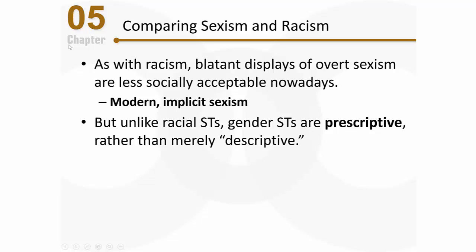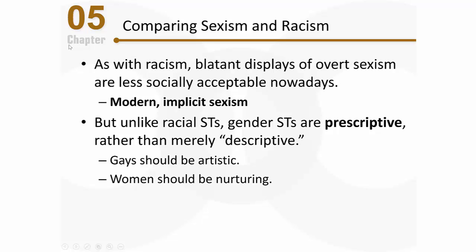Here's an interesting difference: unlike racial stereotypes, gender stereotypes are prescriptive rather than merely descriptive. Prescriptive stereotypes indicate what people in society believe men and women should be like — what traits they should have. For example, there might be a stereotype that gays are artistic, but society doesn't feel that gays should be artistic, so that's not prescriptive. But there is a stereotype that women are loving and nurturing, and society does believe women should be nurturing and loving — that's a prescriptive stereotype.